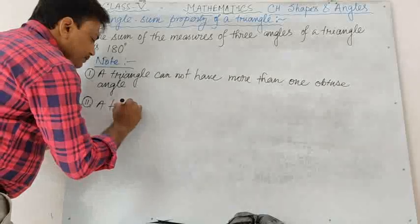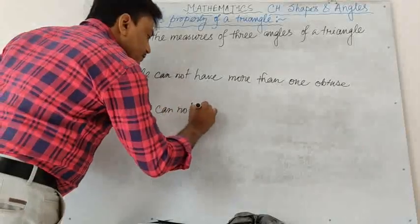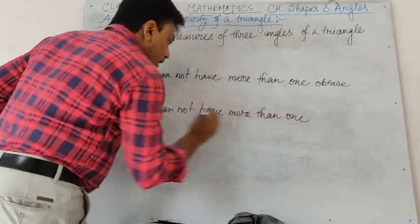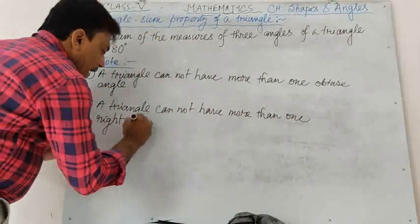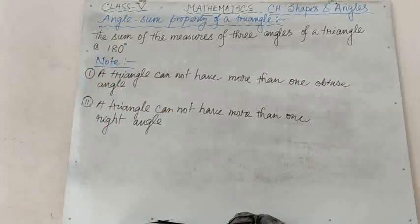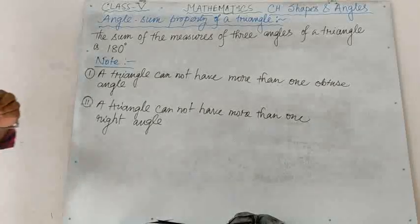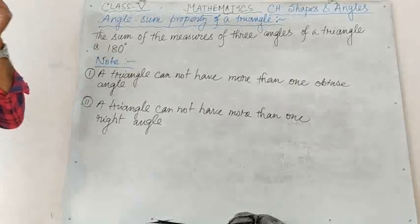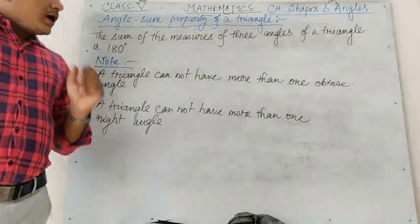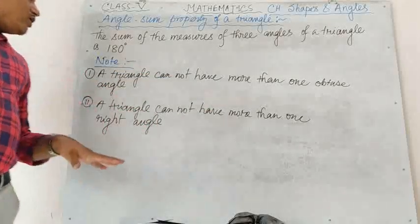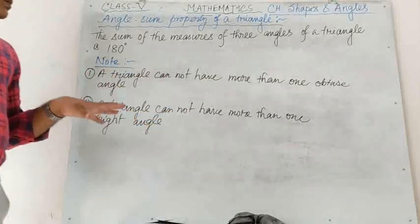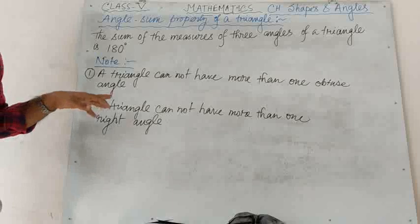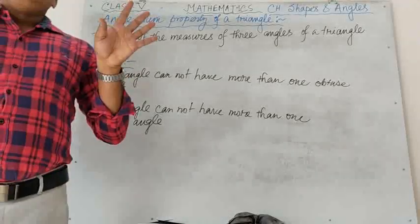Number 2: A triangle cannot have more than one right angle. Because if there are two right angles, their sum is already 180 degree, leaving no valid measure for the third angle — which also contradicts the angle sum property. So a triangle cannot have more than one right angle. Keep both these points in mind.